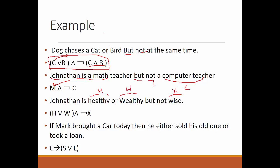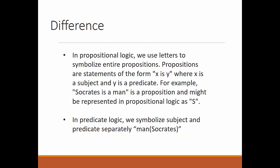'If Mark bought a car today then he either sold his old one or took a loan' — C represents Mark bought a car today, S represents he sold his old one, and L represents he took a loan. 'If...then' indicates implication, so this is: C implies (S OR L).